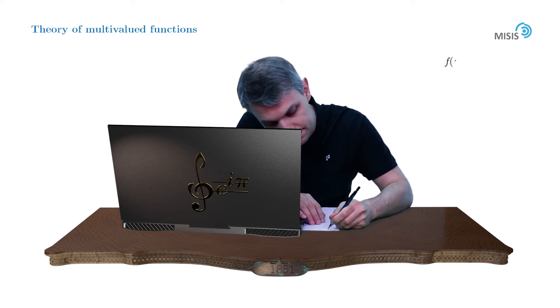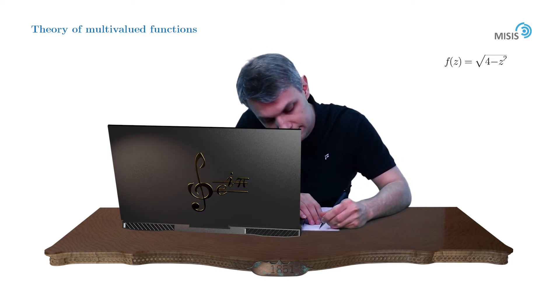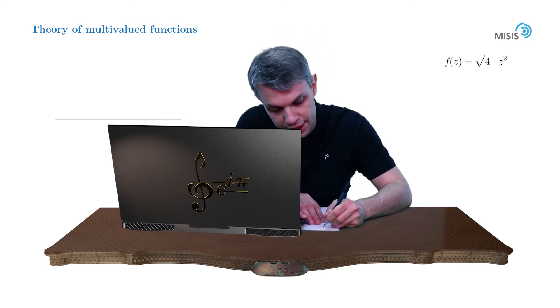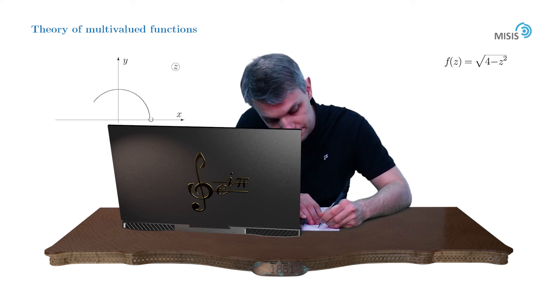So here is our function, and the branch cut is upper semicircle radius 2 connecting points negative 2 and 2. Like this.